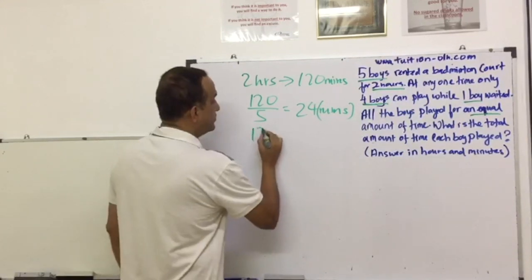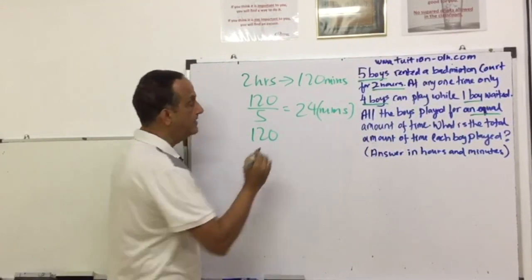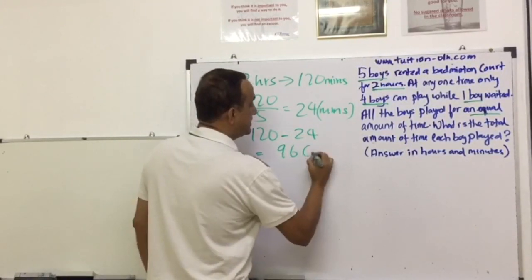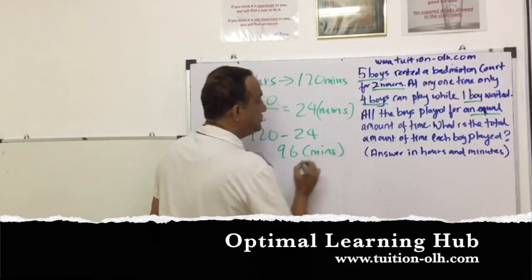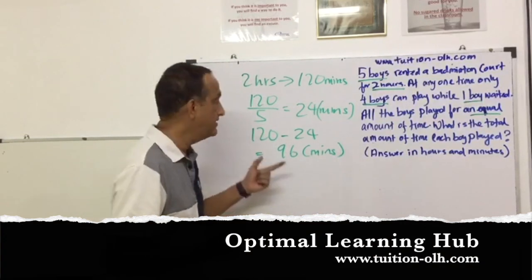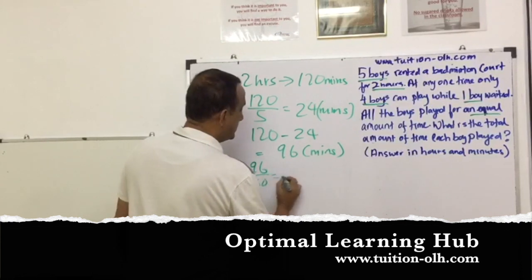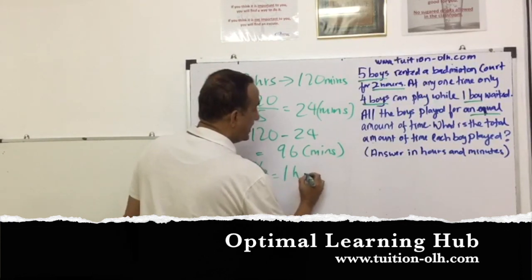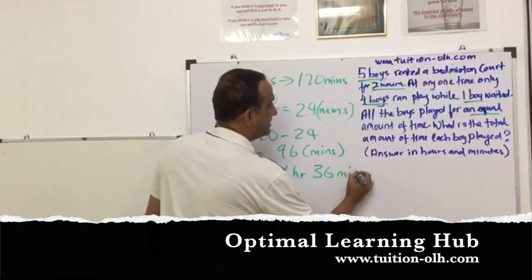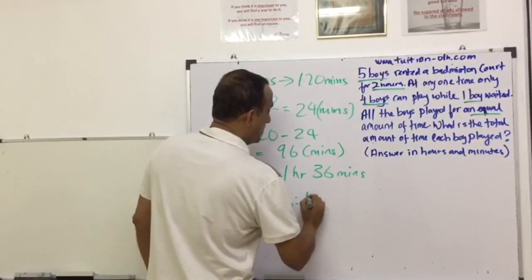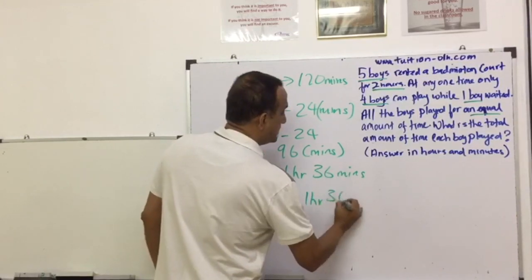So you have two hours, which is 120 minutes, minus the waiting time, you get 96 minutes. Each boy played 96 minutes. 96 minutes is 96 divided by 60, which gives me one hour and 36 minutes. So the answer is one hour and 36 minutes.